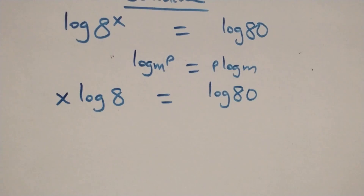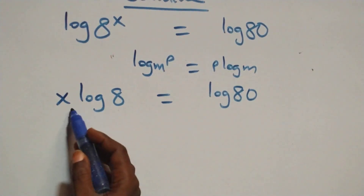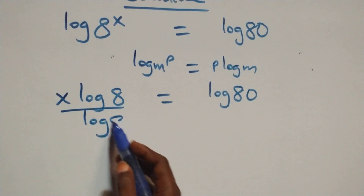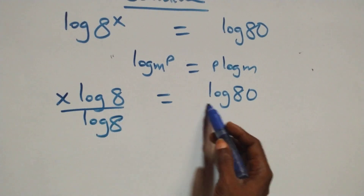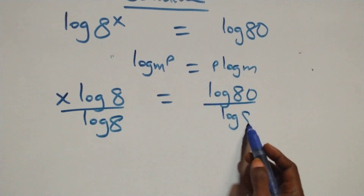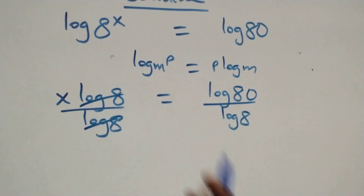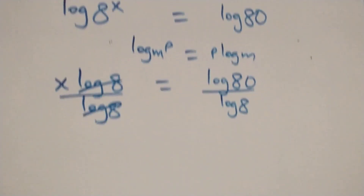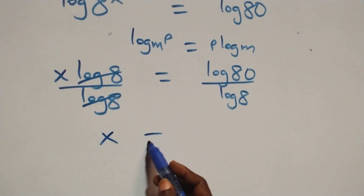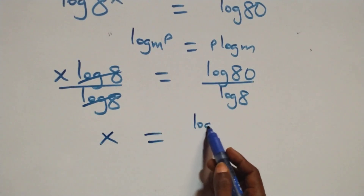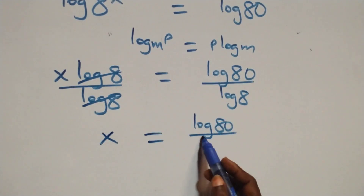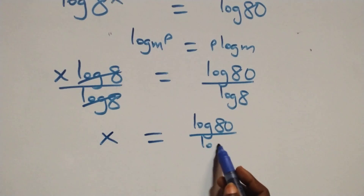At the next step we divide both sides by log 8. Log 8 cancels on the left side, and we have x equals log 80 over log 8.